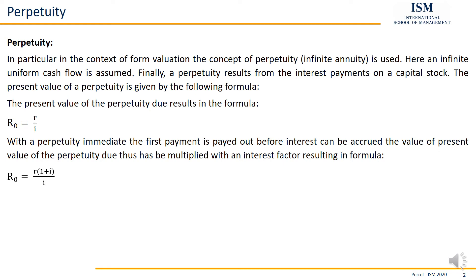Each period I get the same amount of interest and take it out, so the capital stock in the savings account remains the same. This can only work if I give the capital the potential for the first period to actually generate interest.